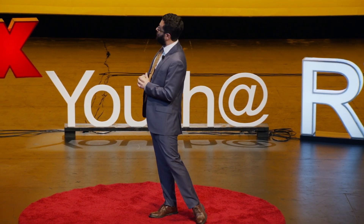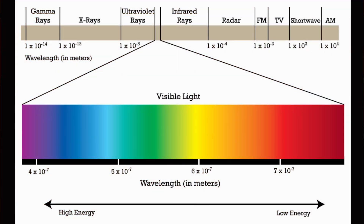We can visualize — pun intended, I suppose — the different kinds of light with what we call the electromagnetic spectrum. Now light is a wave, like waves on the ocean, and so we can characterize it by the wavelength, that is the distance between the tops of the waves.